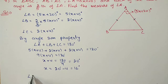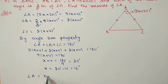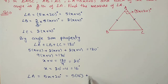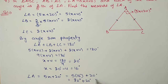After getting the x value, we now have to find the measure of angle A. Substituting x in the value of A: A is equal to 5x plus 20. So 5 into 16 plus 20 equals 80 plus 20, which equals 100 degrees.